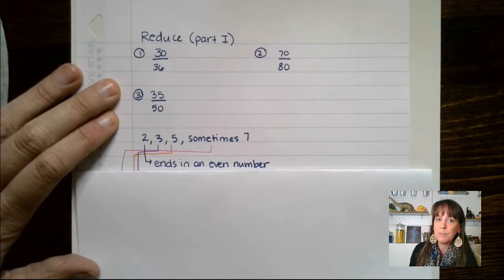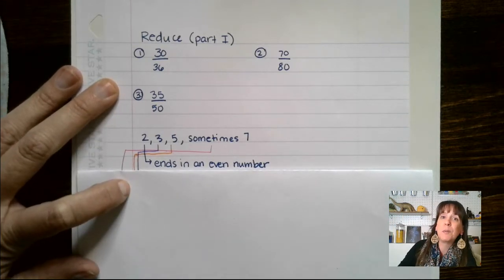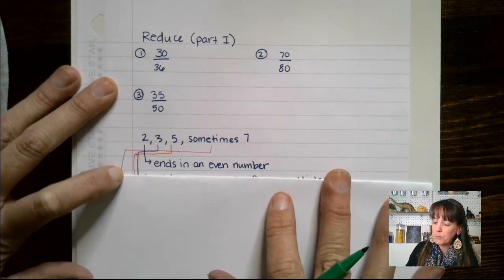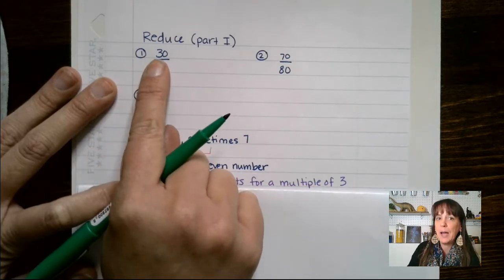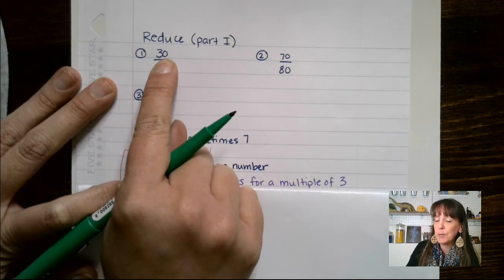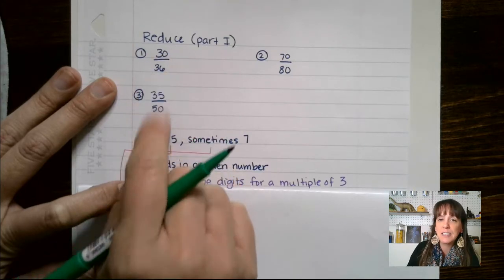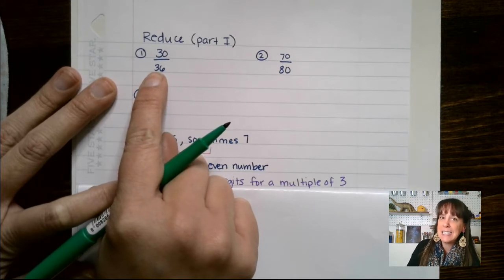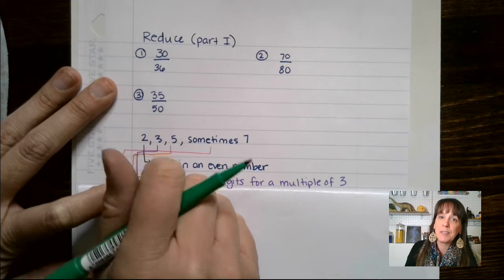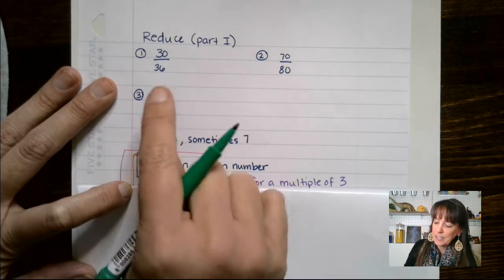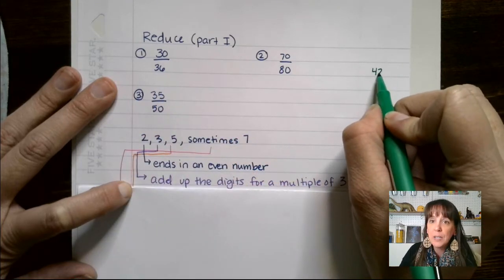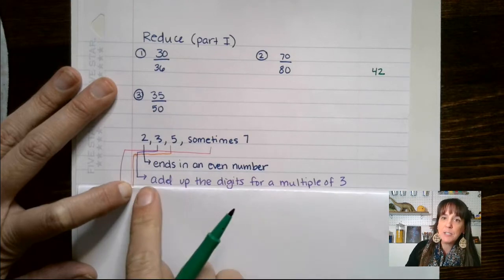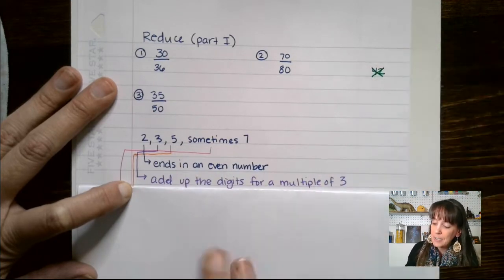First one: two — it ends in an even number. If something ends in an even number then we know it is divisible by two, and dividing by two just cuts something right in half. Three is a really fun one. You add up the digits — for example, 3 plus 0 gives us 3, which is a multiple of 3. For 36, 3 plus 6 gives us 9, and 3 is a factor of 9. Another one might be 42: 4 plus 2 is 6, which is a multiple of 3, so 3 goes into 42.